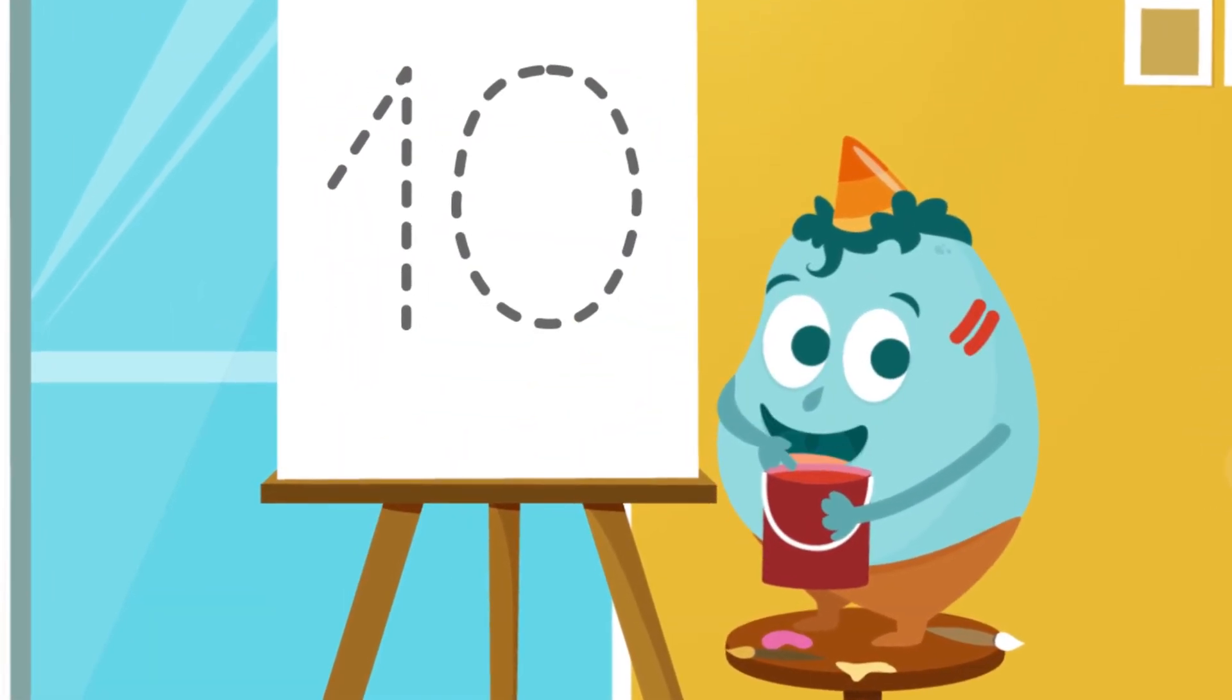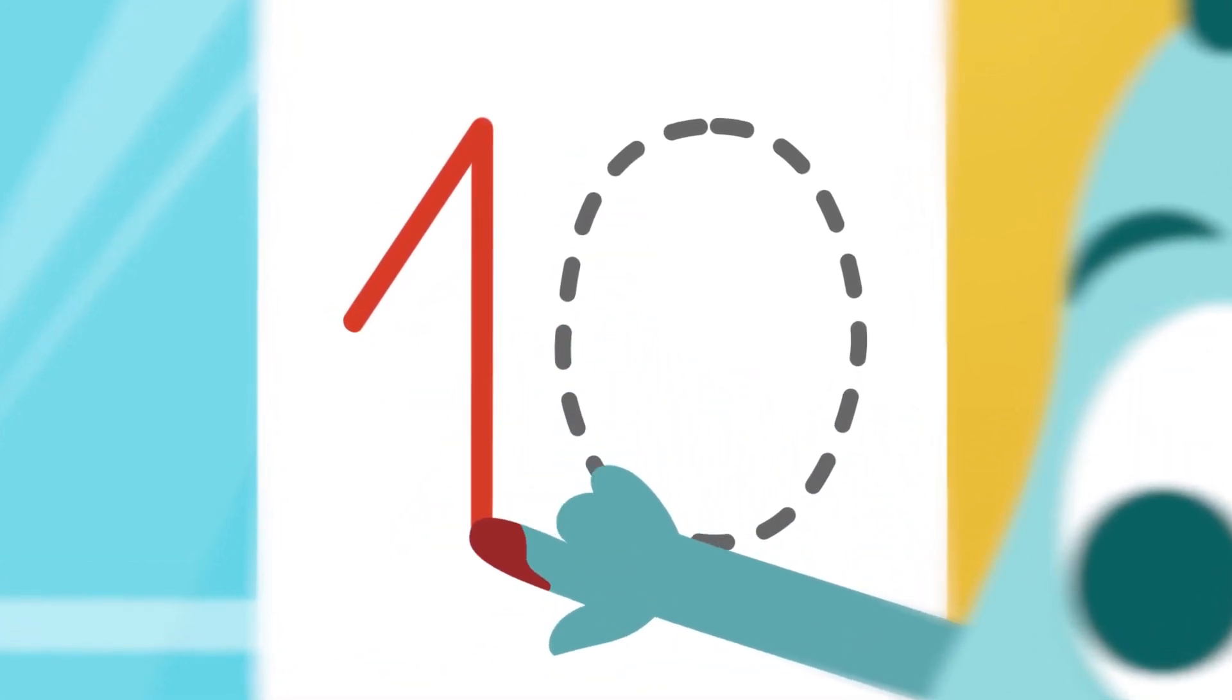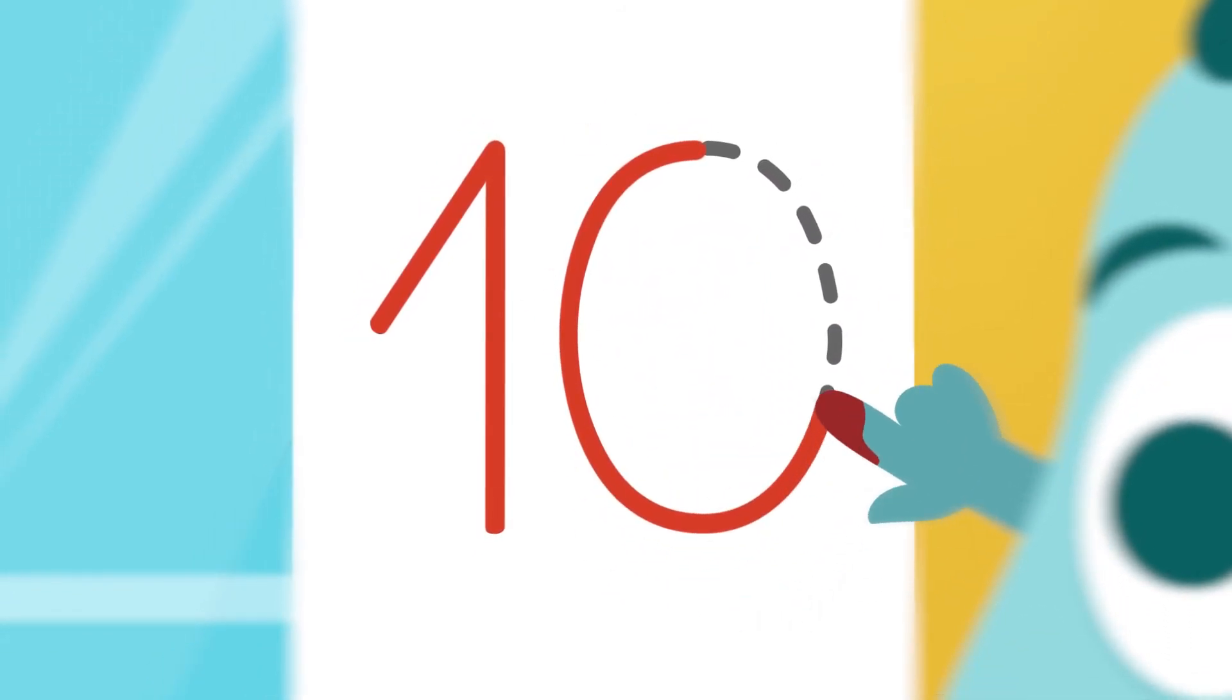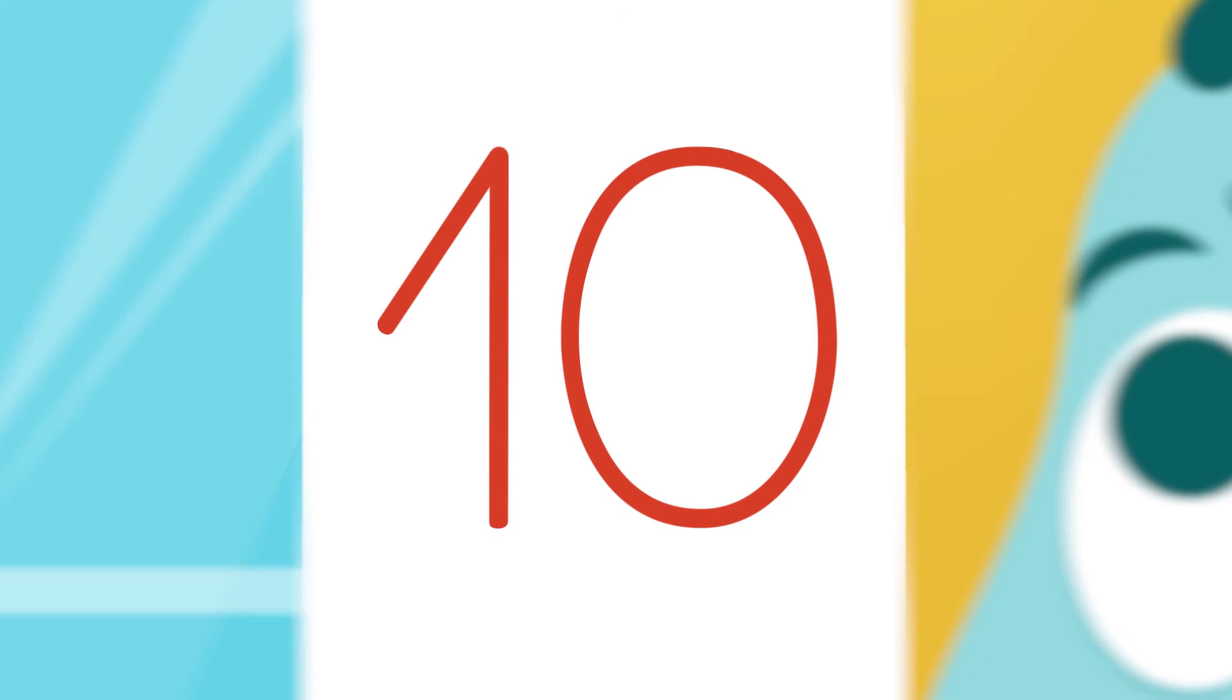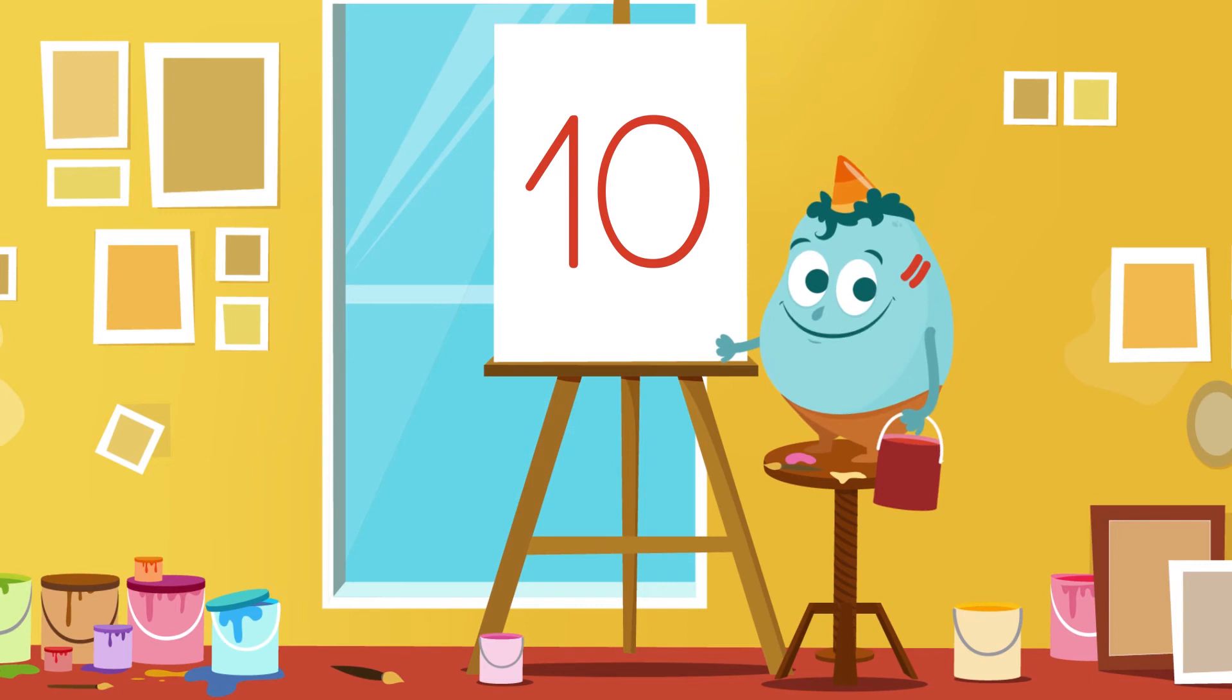And for the last one, we make a one like we did before. But then, we add a zero to the right. We start here and we make a circle. What number is this? Number ten! Very good! Yay! Well done! Now you can write the numbers! See you later!